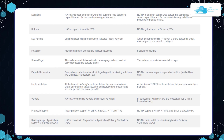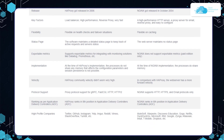For protocol support, HAProxy supports gRPC, FastCGI, HTTP, and HTTP/2, while Nginx supports HTTP, HTTPS, and email protocols only. In ADC rankings, HAProxy ranks eighth and Nginx ranks sixth. High-profile HAProxy users include Twitter, GitHub, Instagram, Yelp, Imgur, Reddit, Vimeo, Stack Overflow, and Tumblr, while Nginx is used by Microsoft, IBM, Google, Zynga, and Atlassian.